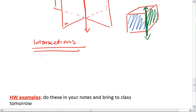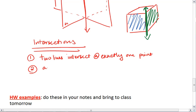We know that two lines intersect at exactly one point. We should also realize that a line and a plane intersect at one point.